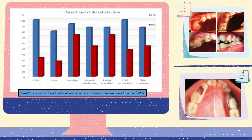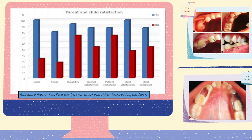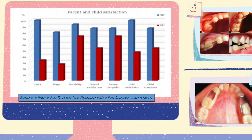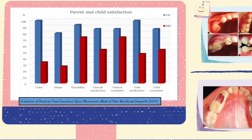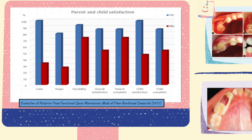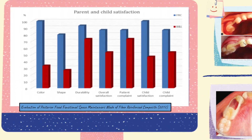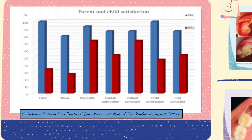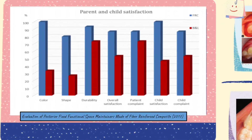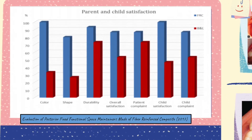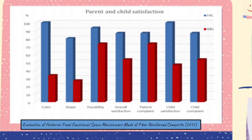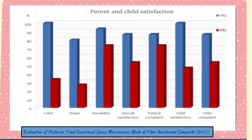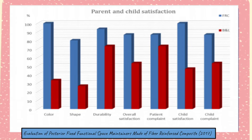Despite that, it is still a superior alternative to conventional band and loop. As you can see from this graph, the evidence portrays that parents and children are much more satisfied with the glass fiber reinforced composite resin as a space maintainer. Now I will pass the presentation to the next presenter.